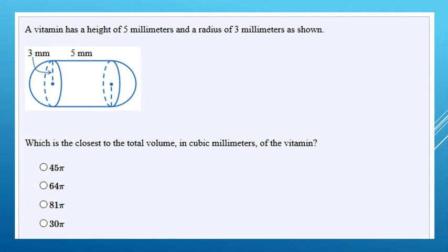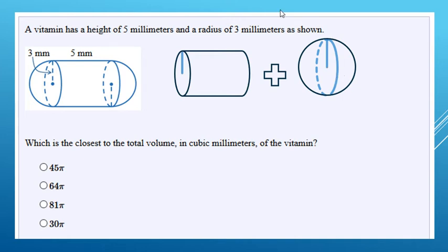All right, so here we're going to find the volume of a cylinder with two hemispheres on the ends. We're going to break it up into chunks. We have the cylinder, and then we also have the two hemispheres that make a whole sphere.